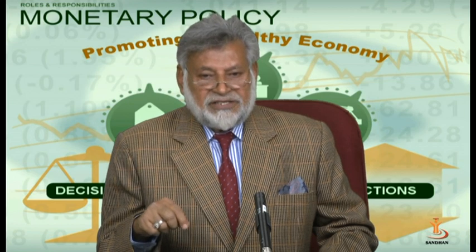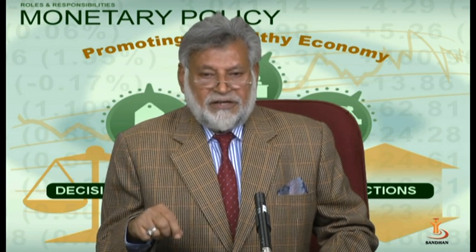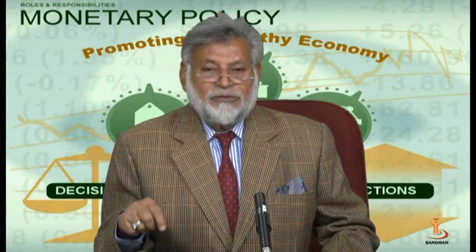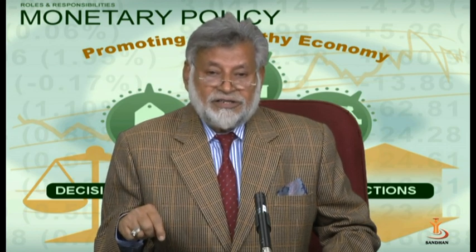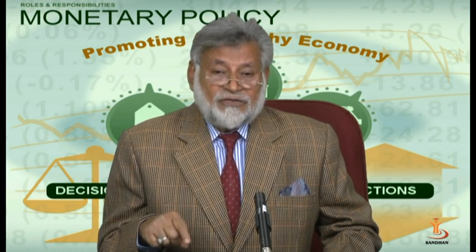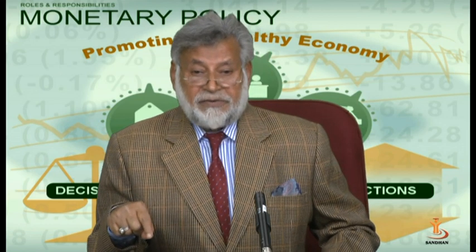M1 includes currency with the public plus demand deposits — different kinds of demand deposits are included — plus other deposits, meaning deposits which are there in the RBI or other foreign deposits in the RBI. So the coverage of M1, as a constituent of money supply, is limited: currency with the public, demand deposits, and deposits with the RBI. Deposits in the RBI in the sense that commercial banks deposit in the RBI.